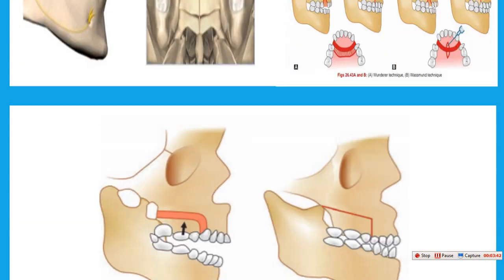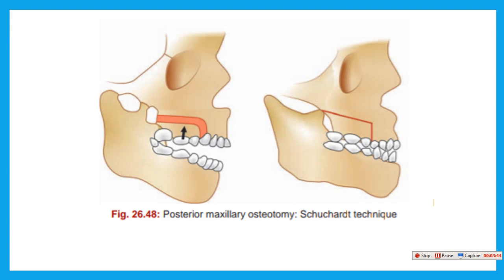Also, this posterior subapical osteotomy is used to move the posterior alveolar area — for uprighting or moving in protrusion or retrusion — according to the treatment plan. The incision is from premolar 4 or 5 to the pterygoid area, with help of the osteotome, and then also stabilized by mini plate and screw.